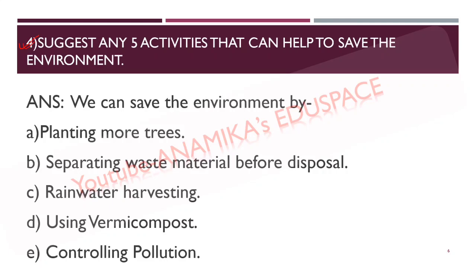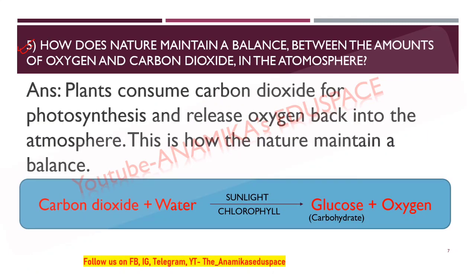Question number four: suggest any five activities that can help to save the environment. The answer: we can save the environment by (a) planting more trees, (b) separating waste material before disposal, (c) rainwater harvesting, (d) using vermicompost, and (e) controlling pollution. Writing answers point-wise helps you get more marks.